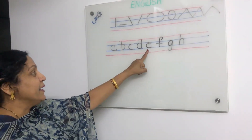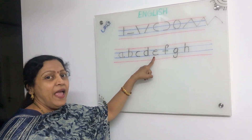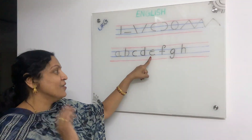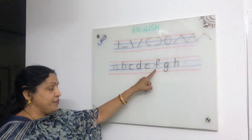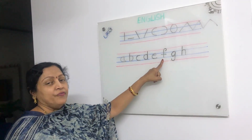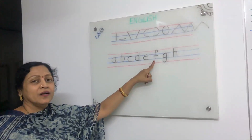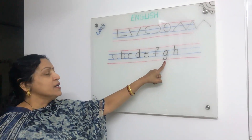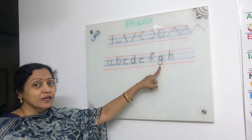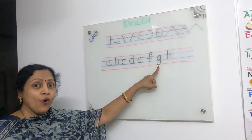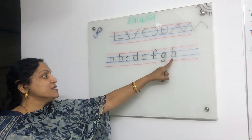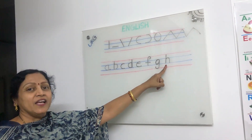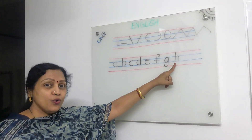This is small E. E for elephant, egg, ears. This is small F. F for fox, frog, and fish. This is small G. G for girl, grapes, goat. This is small H. H for horse, house, hunt.